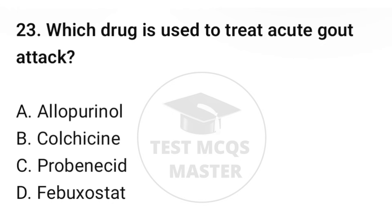Question number twenty-three: which drug is used to treat an acute gout attack? The correct option is B: Colchicine.